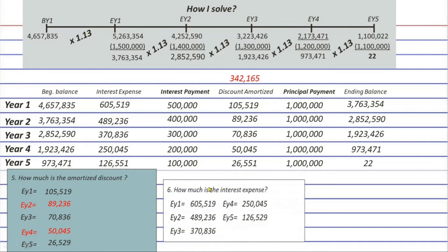Possible question number six: how much is the interest expense? As you can see, you can find it immediately in its dedicated column in the amortization table.